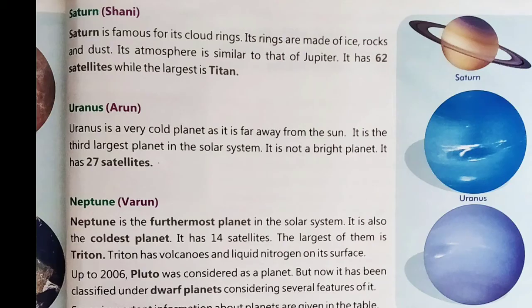Saturn is famous for its rings. Its rings are made of ice, rocks and dust. Its atmosphere is similar to that of Jupiter. It has 62 satellites, while the largest is Titan.